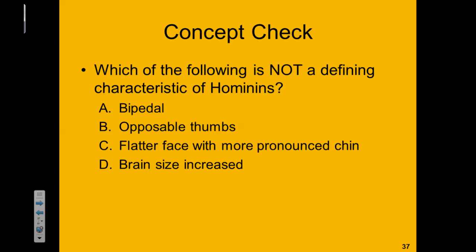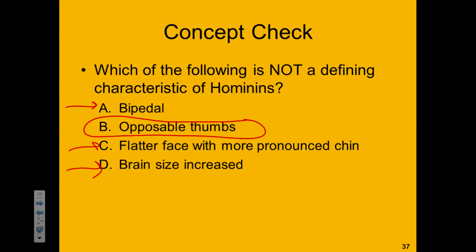Concept check: which of the following is not a defining characteristic of hominins? Bipedal, opposable thumbs, flatter face with more pronounced chin, or increased brain size? The answer is opposable thumbs — opposable thumbs are present in other groups of ape-like creatures that are not hominins. Hominins specifically are defined by their bipedal locomotion, a flat face, and an increased brain size.